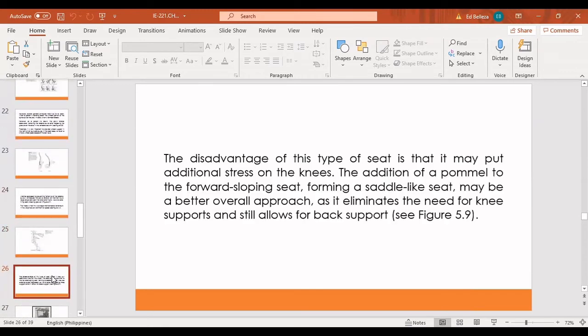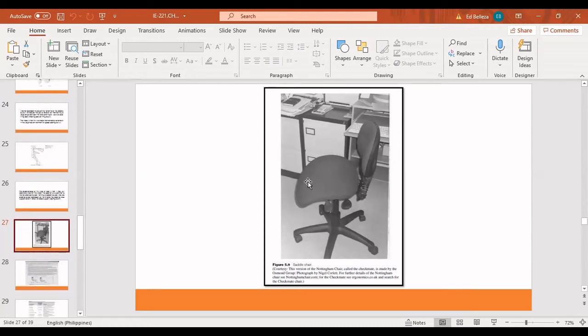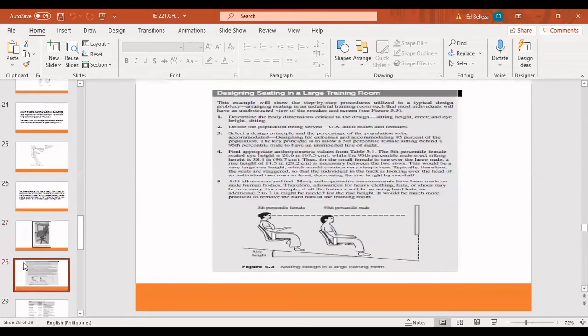Furthermore, however, the disadvantage of this type of seat is that it may put additional stress on the knees. As we all know, it's like kneeling, so it would actually really put pressure. The addition of a pommel to the forward sloping seat forming a saddle-like seat may be a better overall approach as it eliminates the need for knee support and still allows for back support. This is actually an example of a saddle chair. Saddle chair is actually using the same principles in its design as an equestrian saddle. In this part here, this is the version of a saddle chair. And it actually improves leg circulation and reduces fatigue. As an ESL teacher, I have this kind of chair. And I usually use it when teaching in the office. And it actually makes me more comfortable and not so much pressure on my back.